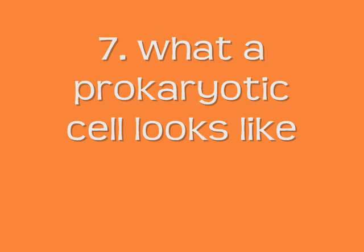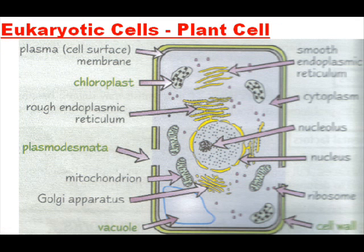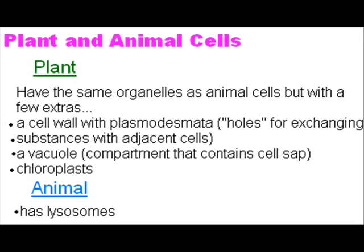Now we're going to look at the differences between an animal and a plant cell. You should remember some parts of this from GCSE. They basically have the same things except animal cells have lysosomes and plant cells have chloroplasts, a cell wall with plasmodesmata — which are holes for exchanging substances with adjacent cells — and a vacuole, a compartment that contains cell sap. They're both called eukaryotic cells.